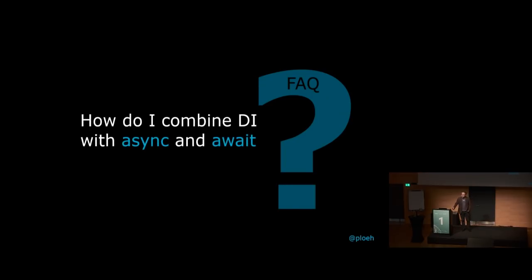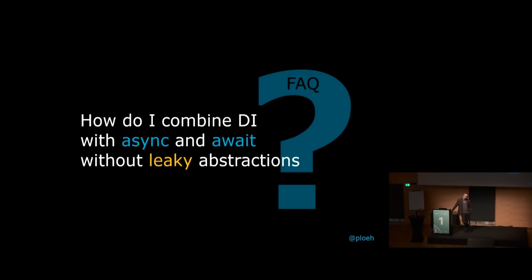The first question I'll try to address is: how do I combine dependency injection with async and await without leaky abstractions? If you remove that qualification it's not that hard, but if you want to avoid leaky abstractions it becomes a little bit harder.